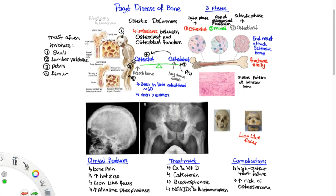In summary, Paget's disease of bone is a disorder with a lot of bone remodeling. The resulting bone is thick, sclerotic, and fractures easily.